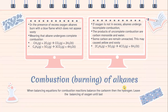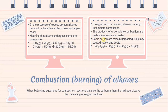Combustion or burning of alkanes. In the presence of excess oxygen, alkanes burn with a blue flame, which means alkanes undergo complete combustion. For example: CH₄ + 2O₂ → CO₂(g) + 2H₂O(l), or C₃H₈(g) + 5O₂(g) → 3CO₂(g) + 4H₂O(l). If oxygen is not in excess, alkanes undergo incomplete combustion. The products are carbon monoxide and water, and some carbon remains unreacted — this may cause a yellow and sooty flame. When balancing combustion equations, balance carbon first, then hydrogen, and leave oxygen until last.